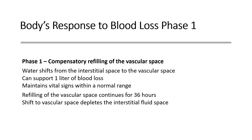The body's response to blood loss occurs in several phases. The first phase is compensatory refilling of the vascular space. The vascular space and the interstitial space are both extracellular and contain the least amount of water in the body. In this first phase, water shifts first from the interstitial space into the vascular space because the decrease in vascular volume creates an increase in solute concentration, and water moves through osmosis. There is also a change in pressure which causes water to move. This can support up to a liter of blood loss and maintain vital signs within a near-normal range.